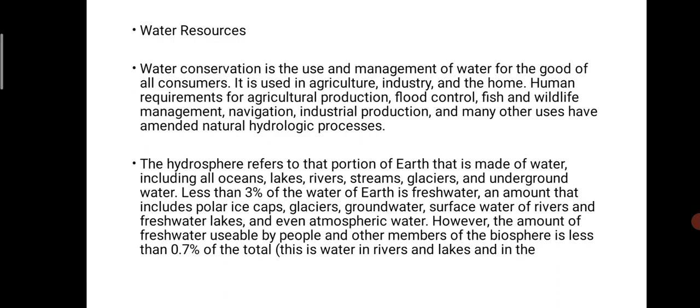The hydrosphere refers to the portion of Earth made up of waters, including oceans, lakes, rivers, streams, glaciers and underground water. Less than 3% of Earth's water is freshwater — that includes polar ice caps, glaciers, groundwater, surface water, reservoirs, freshwater lakes, and even atmospheric water. However, the amount of freshwater usable by people and other members of the biosphere is less than 0.7%.